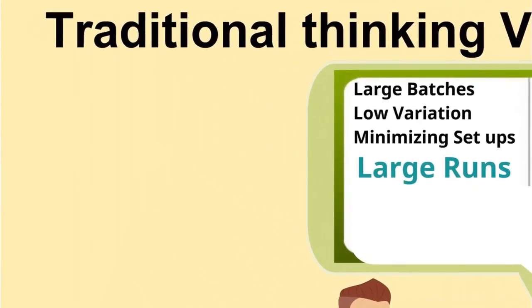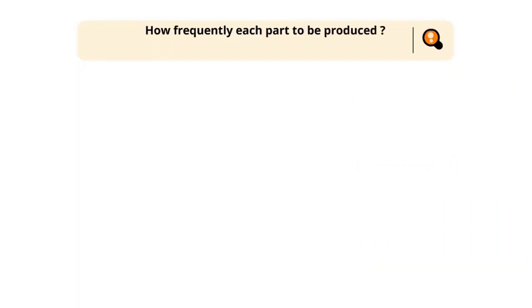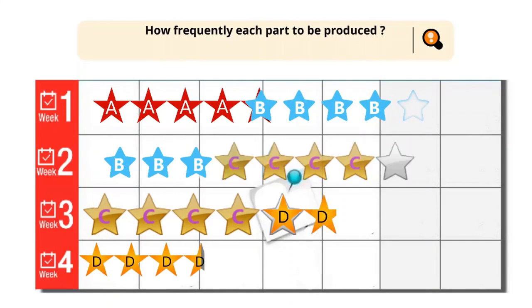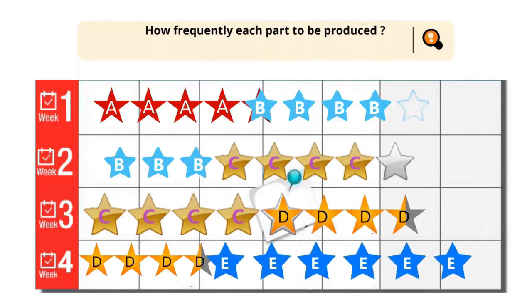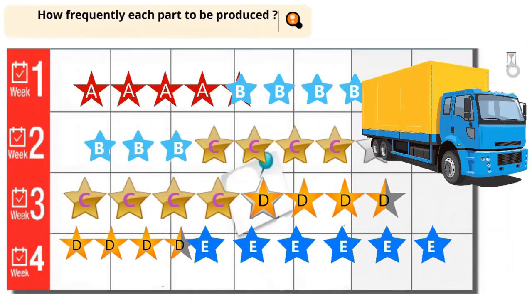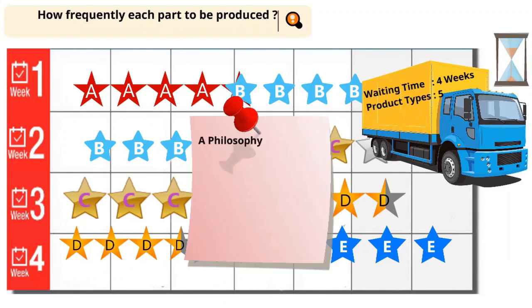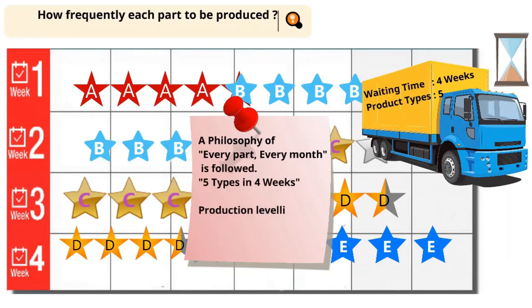How frequently should each part be produced? Let us look at a production planning where every part is produced every week. The dispatch truck has to wait for four weeks to get all five products for dispatch. It is possible by having a philosophy of every part every month — five types in four weeks. For this, the production levelling ratio is 1.25.